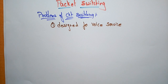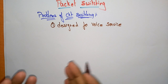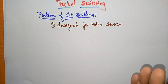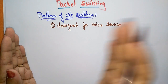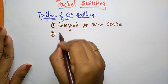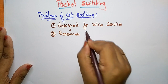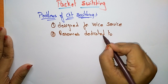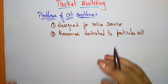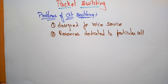The second problem is that resources are dedicated to a particular call. If one person is calling another person, a dedicated one-to-one communication will be there. That is one problem — resources are dedicated to a particular call. And next, for data transfer, much of the time the connection is idle, because circuit switching is only designed for voice services.